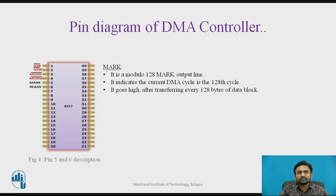About the next pin, MARC — it is a modulo 128 MARC output line. It indicates that the current DMA cycle is the 128th cycle. It goes high after transferring every 128 bytes of the data block.